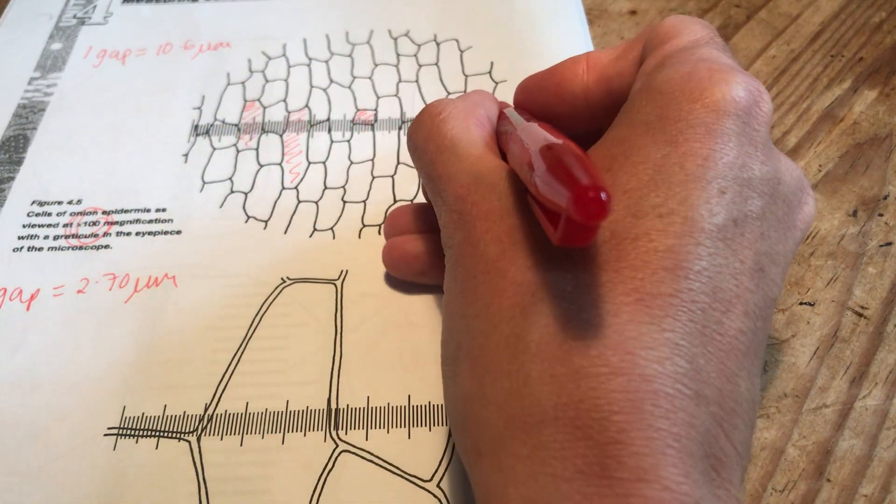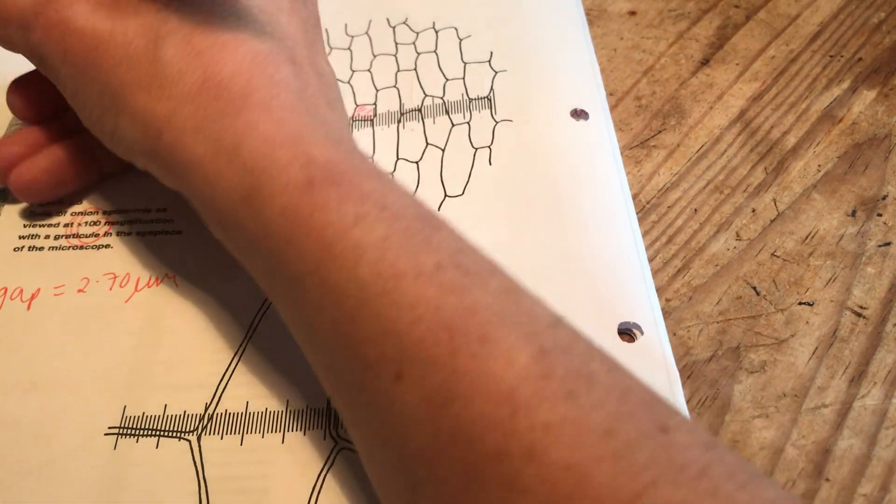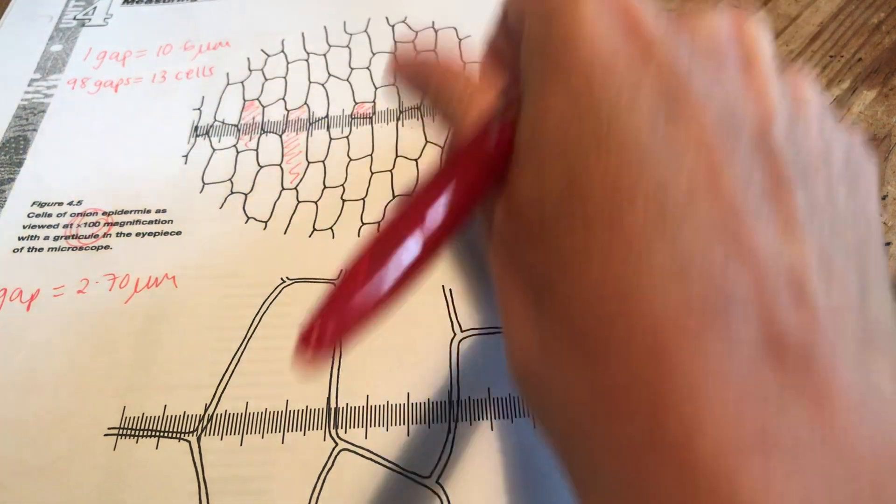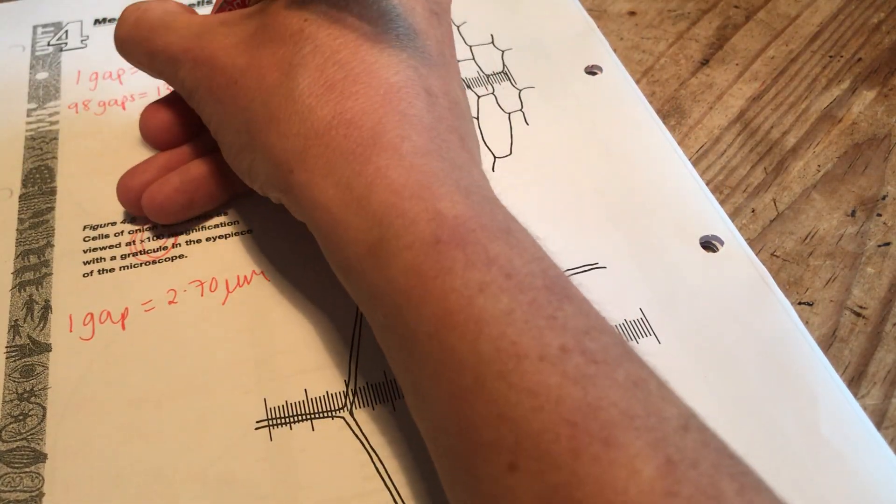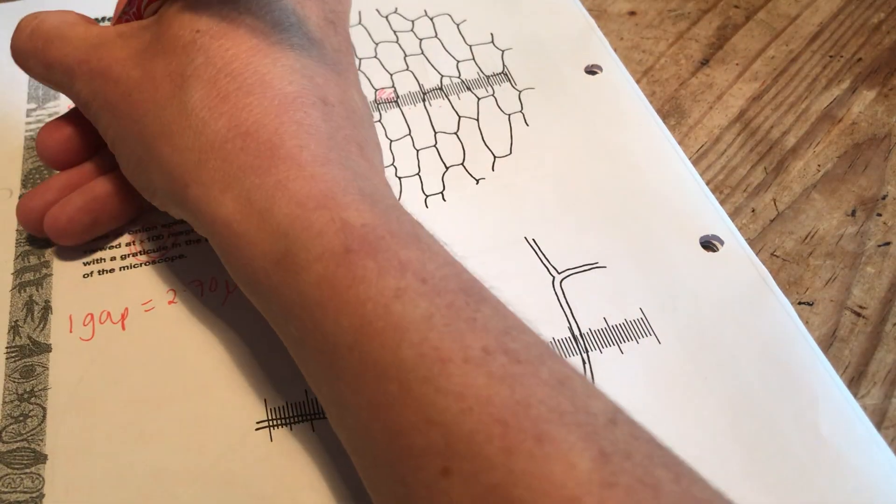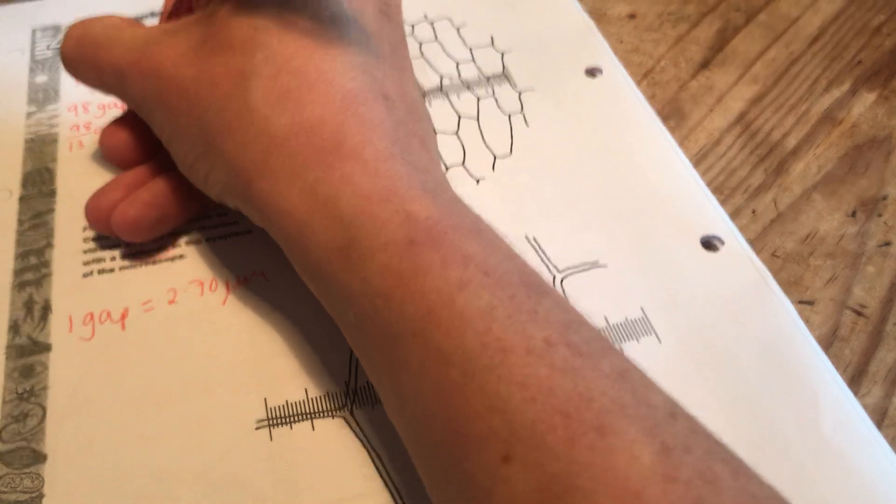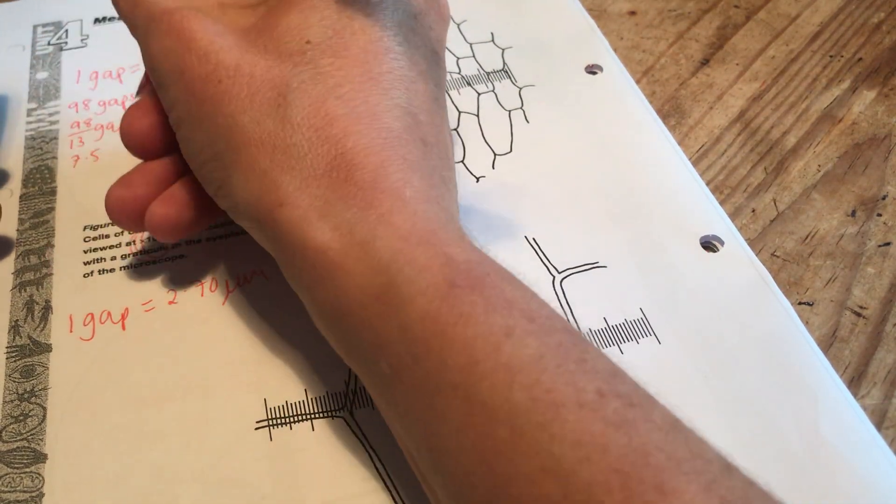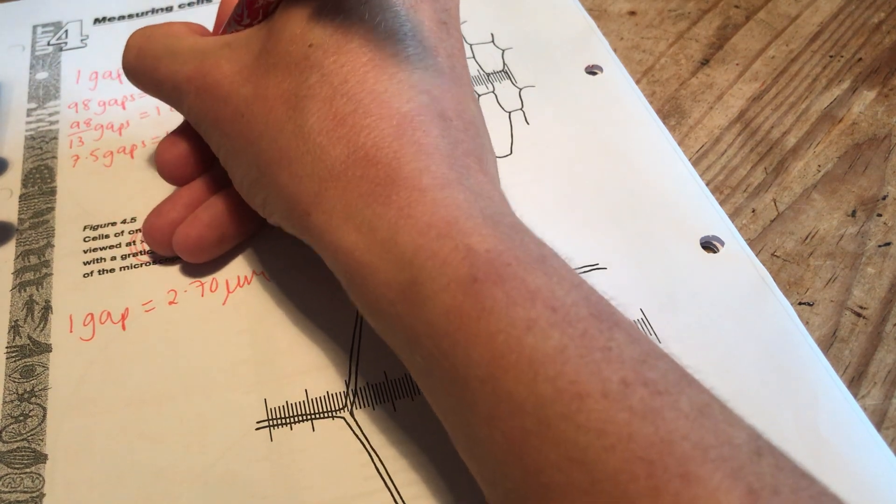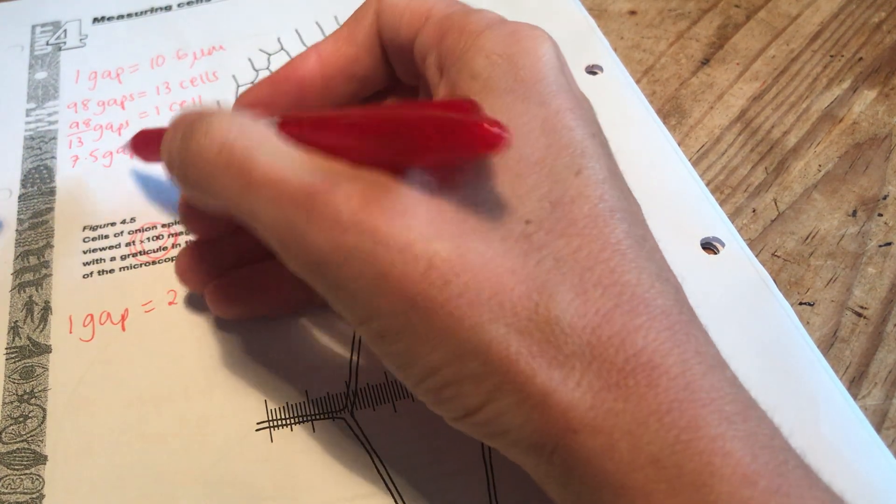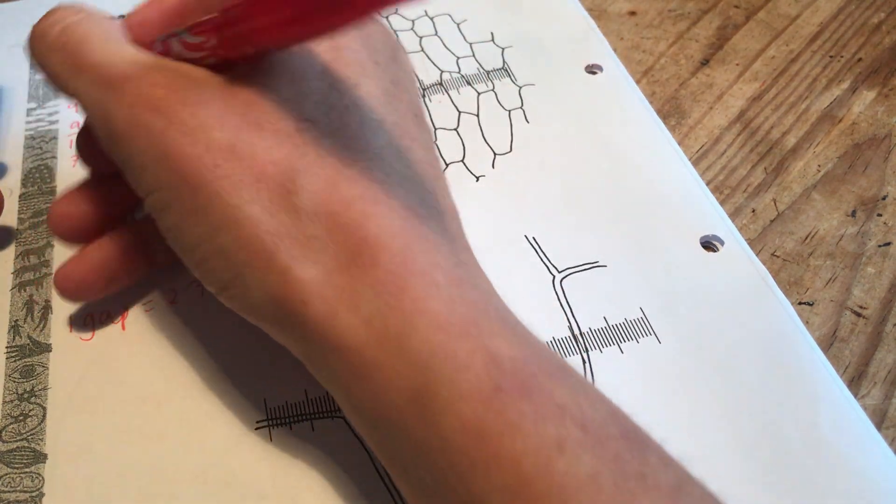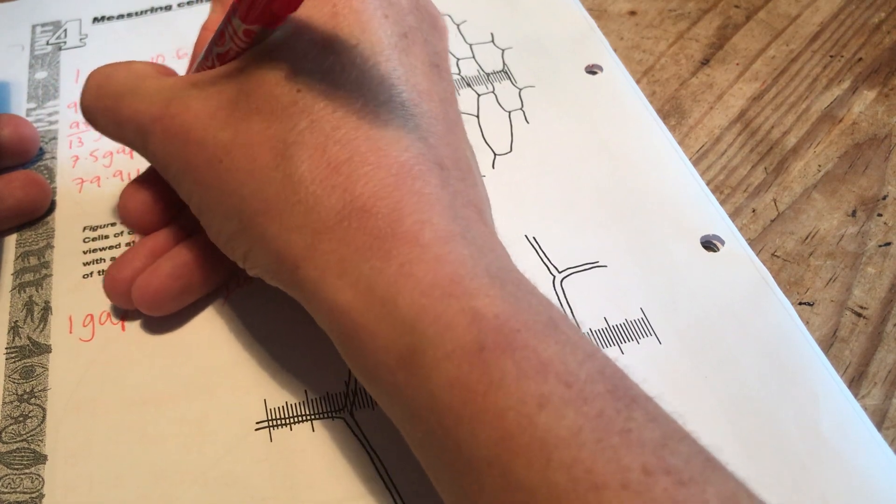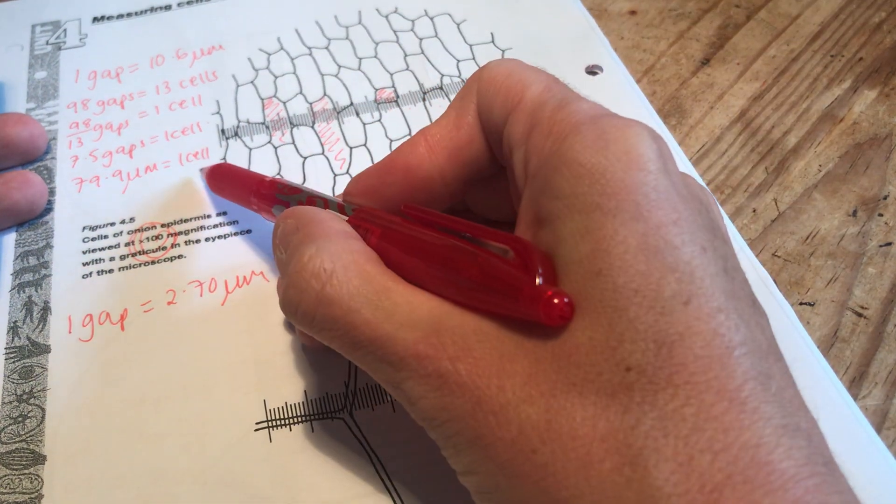Let's say 13 cells fit in 98 gaps. So in 98 gaps, that equals 13 cells wide. So how many gaps is one cell worth? Let's do 98 divided by 13. So you could say each cell on average is worth 7.5 gaps. You know that one gap is 10.6. So if I times 7.5 by 10.6, I get 79.9 micrometers is my average width of one cell.